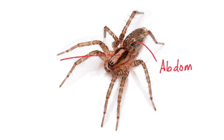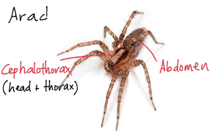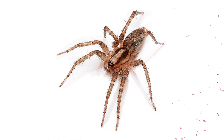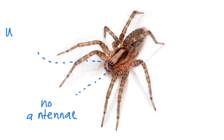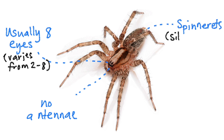An arachnid, or a spider, has two body segments: the abdomen and the cephalothorax, which includes both the head and the thorax combined. If you look at the head of a spider, you'll notice that there are no antennae, and there's usually a lot of eyes — eight of them, but this can vary between two to eight. In their abdomen, they also have spinnerets, which are silk-producing organs to make their webs.